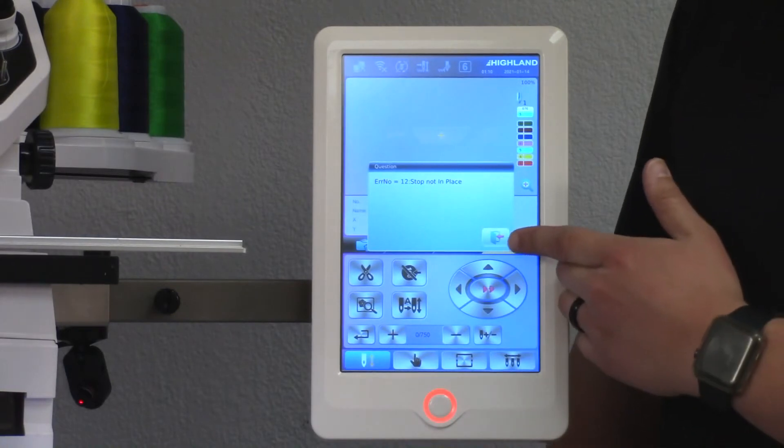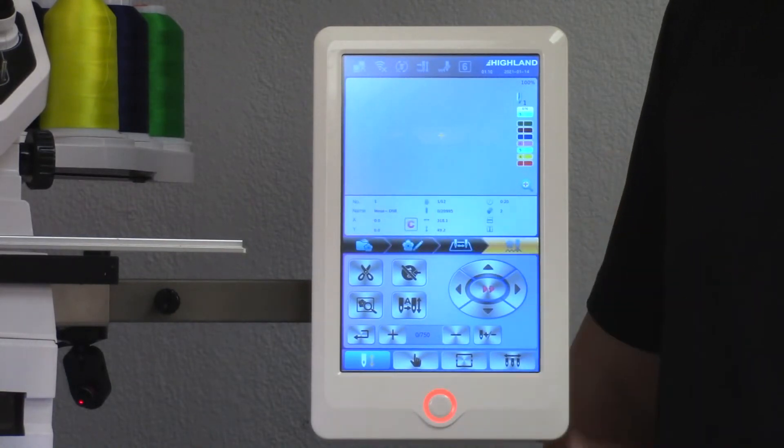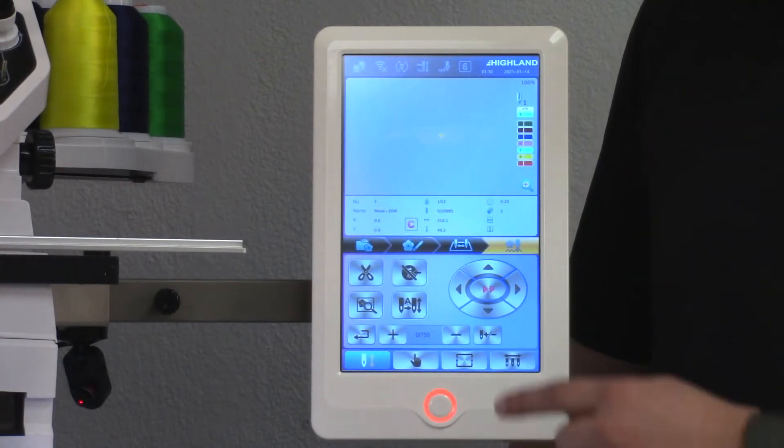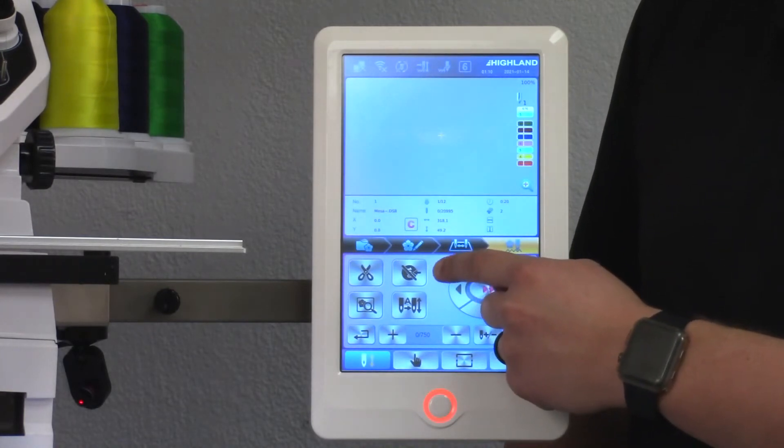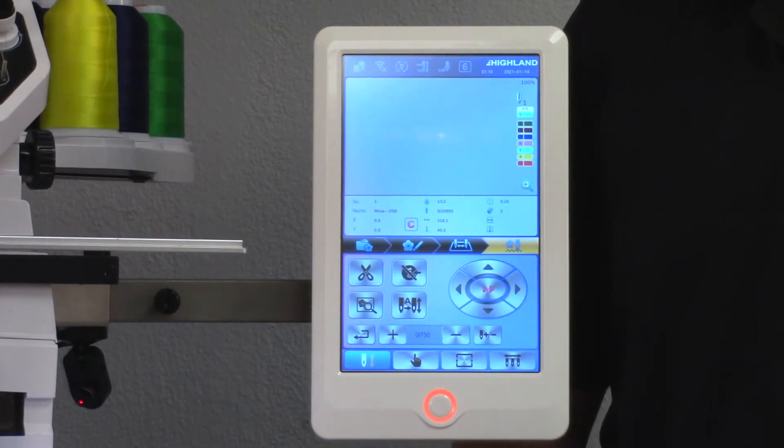To fix this, all I need to do is tap the arrow going out the door to clear the error message. And on my home screen, I'll see this 100 icon, which in our case has a slash over it.